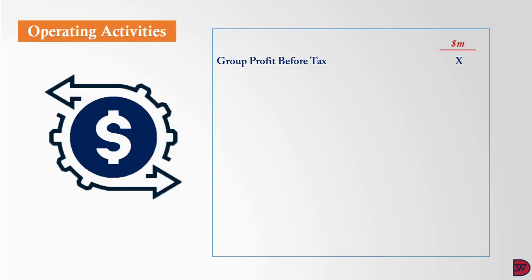We have to make adjustments for non-cash items. Profit and loss accounts are prepared on an accrual basis: revenue is recorded based on it being earned, not when the money is received; expenses are recorded based on being incurred, whether or not the money has been paid. With the cash flow, we add back any item that was deducted to arrive at the group profit before tax, and we subtract any item that was added. Depreciation will have to be added back because it was subtracted.